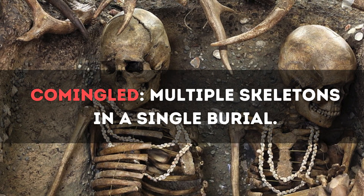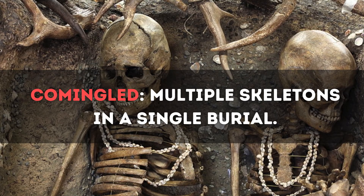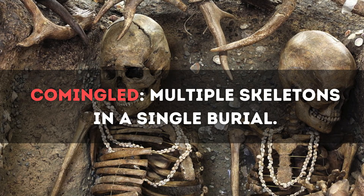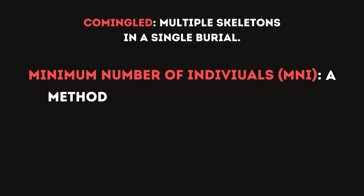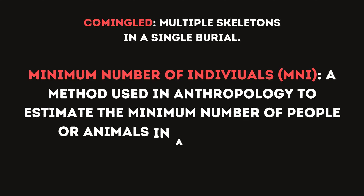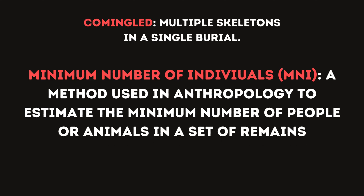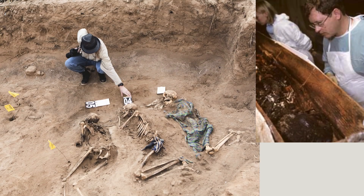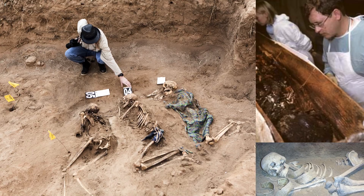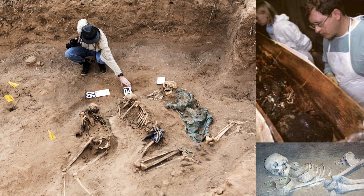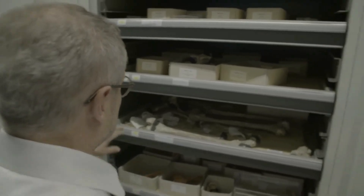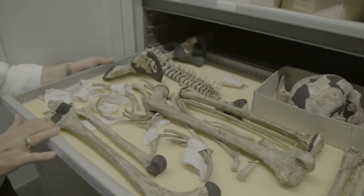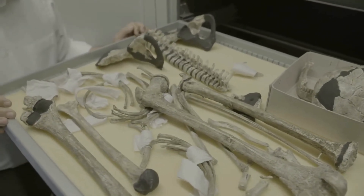When remains are co-mingled — meaning the skeletons aren't in separate burials — the minimum number of individuals is calculated. This ensures each individual is accounted for, particularly in cases of mass graves or disasters. By analyzing bones and their context, forensic anthropologists uncover vital information about the deceased and their stories. This expertise bridges the gap between science and justice, helping solve mysteries from the past and present.